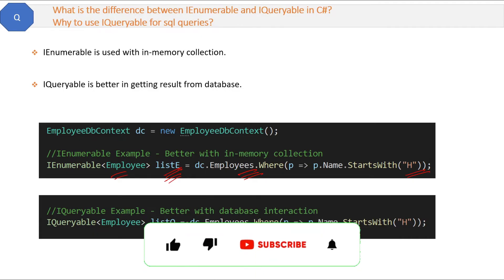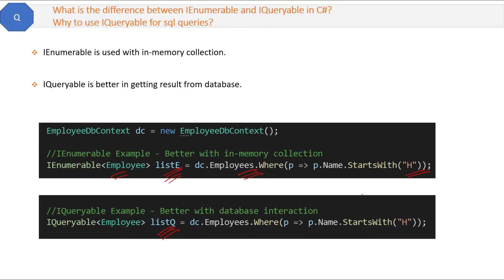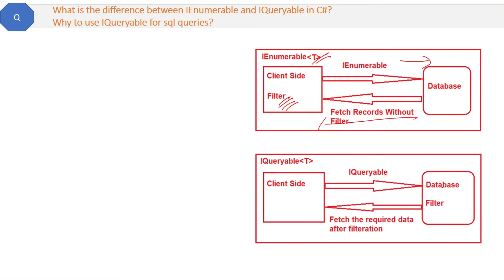The point is that IQueryable will take less time compared to IEnumerable. If you use IEnumerable, the request goes to the database and brings the whole data back, then filters the result at the server side — bringing all that data over the network impacts performance negatively. On the other hand, if you use IQueryable, the request goes to the database, filters the data there, and sends back only the filtered data, which is better for performance. That is why IQueryable is better than IEnumerable for SQL queries and database operations.